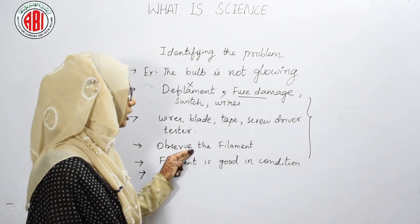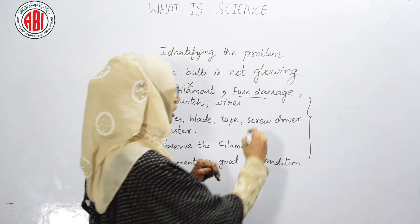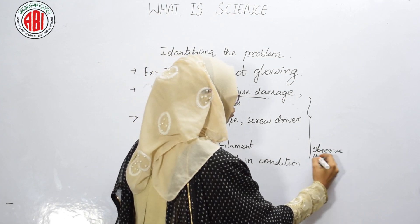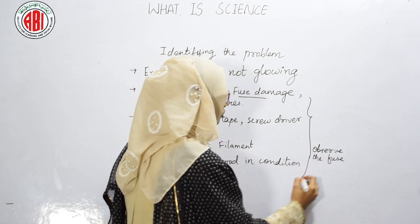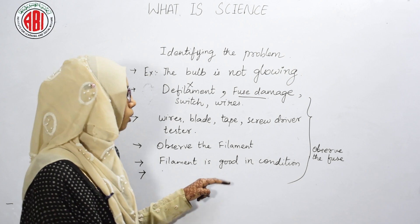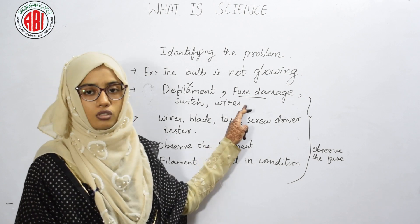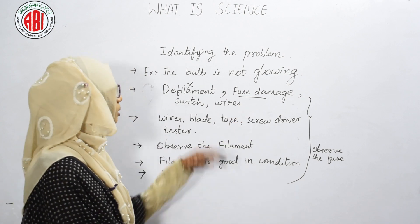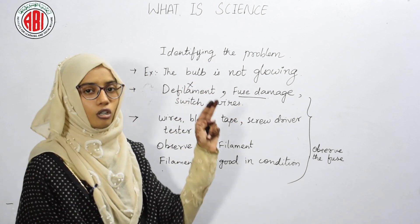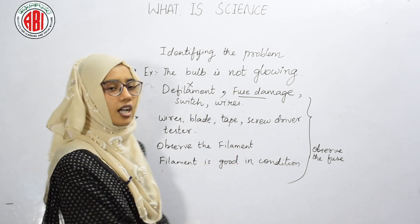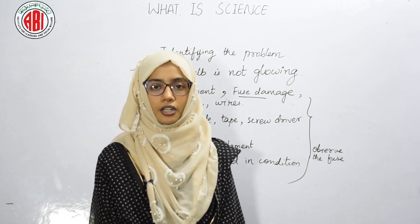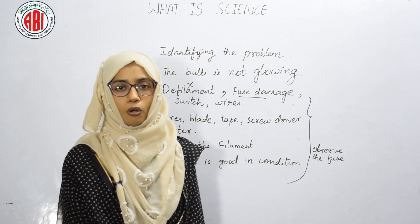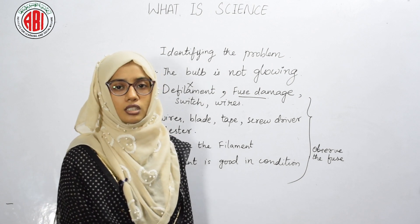Our next hypothesis is fuse damage. After making the new hypothesis and conducting the experiment, we observe the fuse of the bulb. After observing the fuse, we find that it is damaged — due to fuse failure, the bulb is not glowing. This hypothesis is correct. In this way, we can find a solution to our problem using the scientific method.